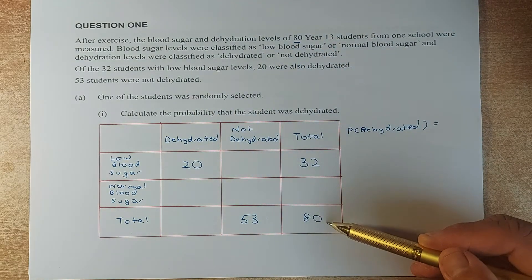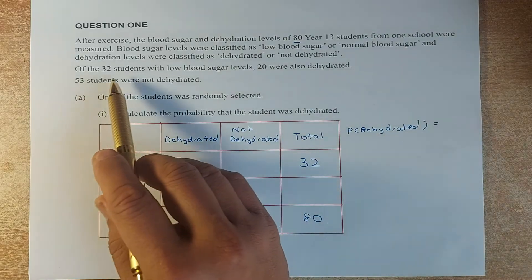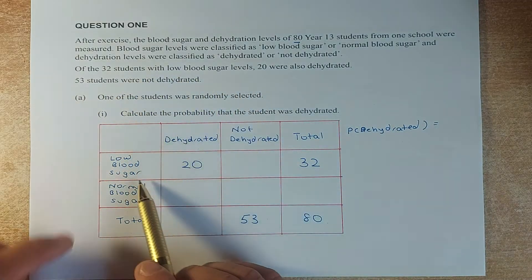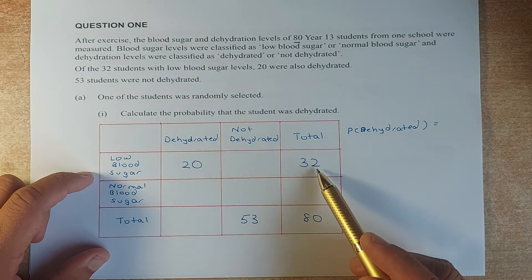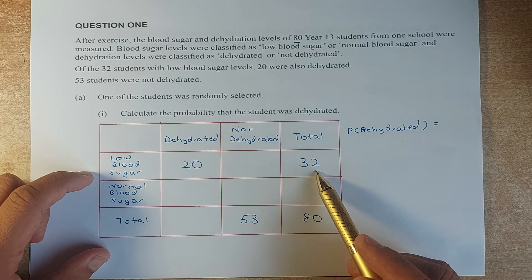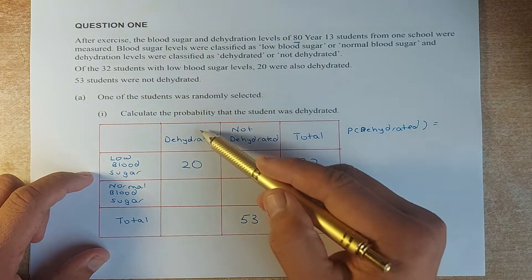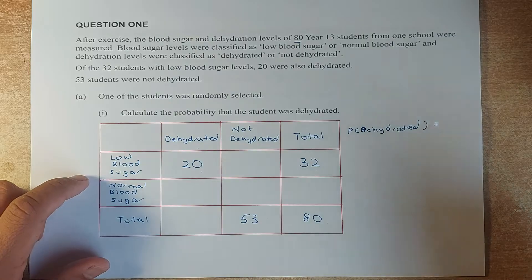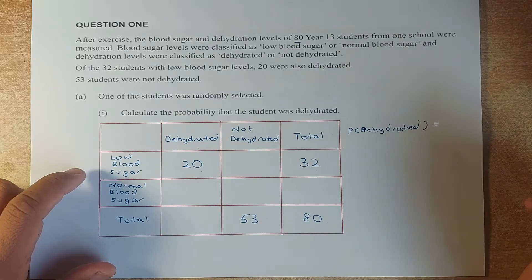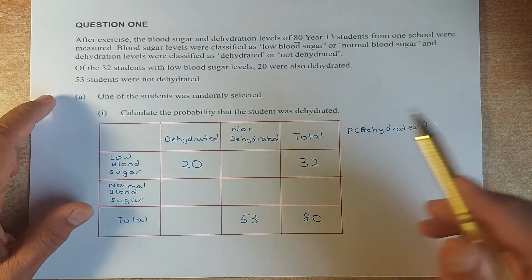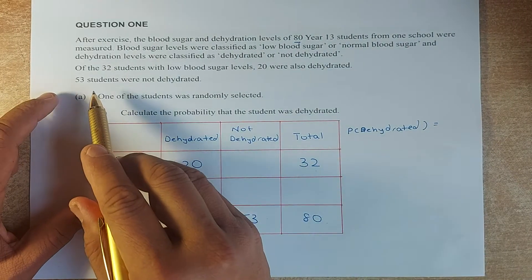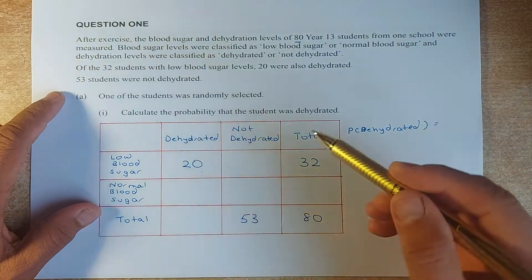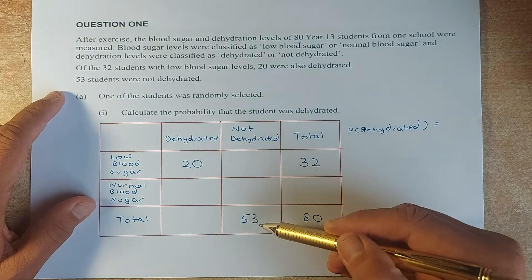The total is 80. Of the 32 people with low blood sugar levels, the total for low blood sugar is 32, and 20 were also hydrated. Of the 53 students that were not hydrated, not hydrated totals 53.